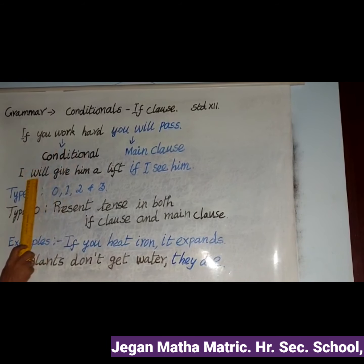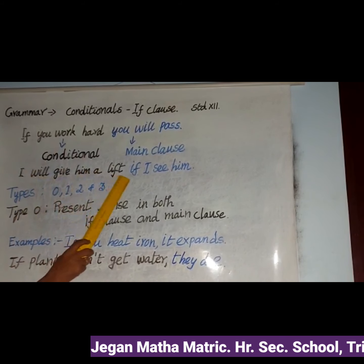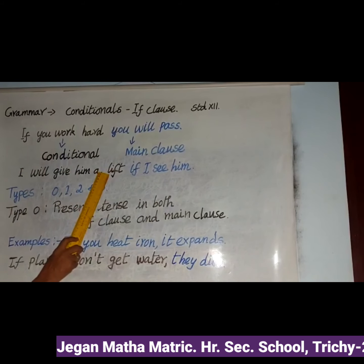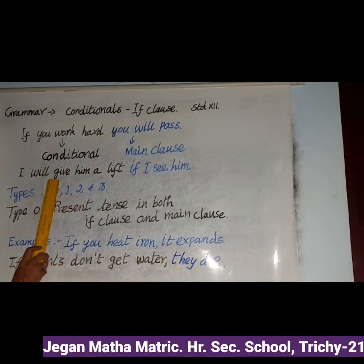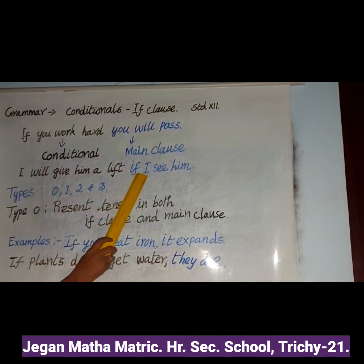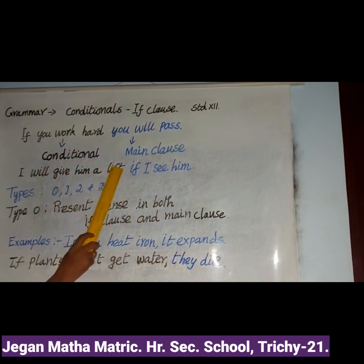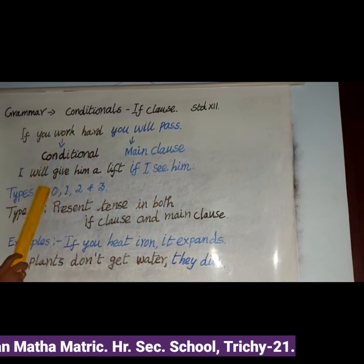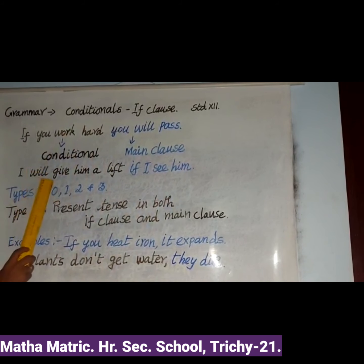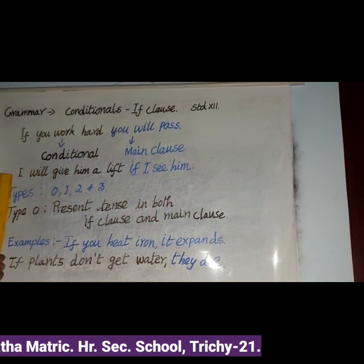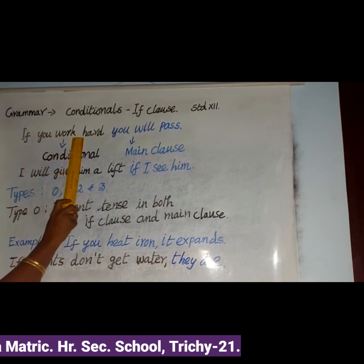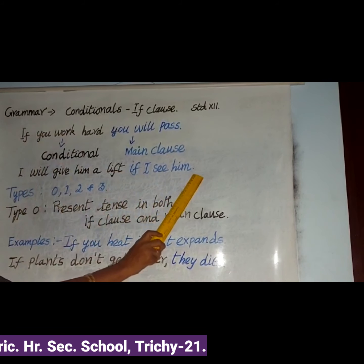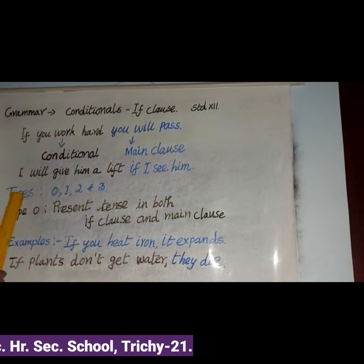See the next sentence: 'I will give him a lift if I see him.' Here, 'I will give him a lift' is the main clause, and 'if I see him' is the conditional clause. The if-clause comes either at the beginning or at the end of the sentence. There are four types of conditionals: Types 0, 1, 2, and 3.